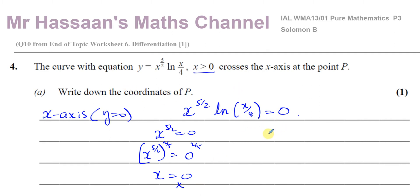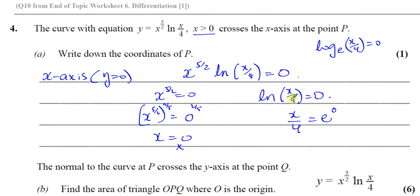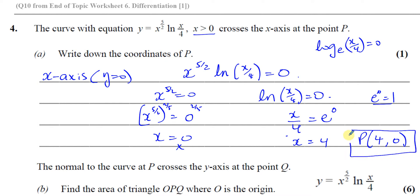So P must be given by the other factor equalling zero: ln of x over four equals zero. ln means log to the base e, so this means e to the power of zero equals x over four. Since e to the power of zero is one, we get x over four equals one, therefore x equals four. So the coordinates of P are (4, 0).